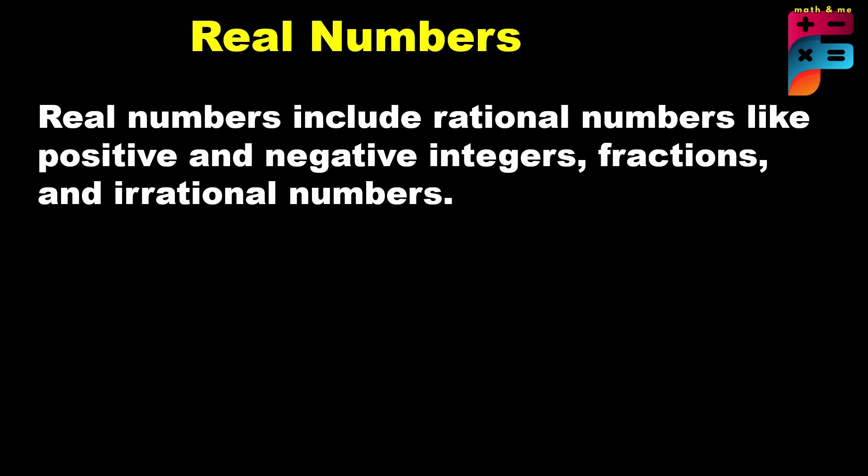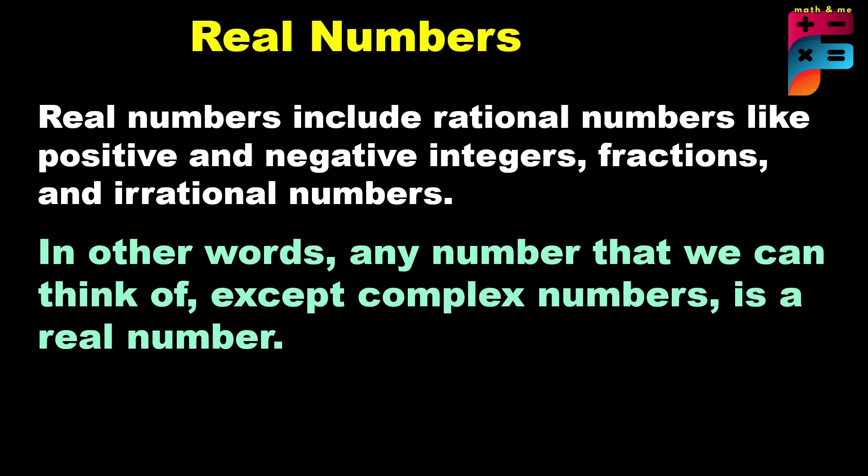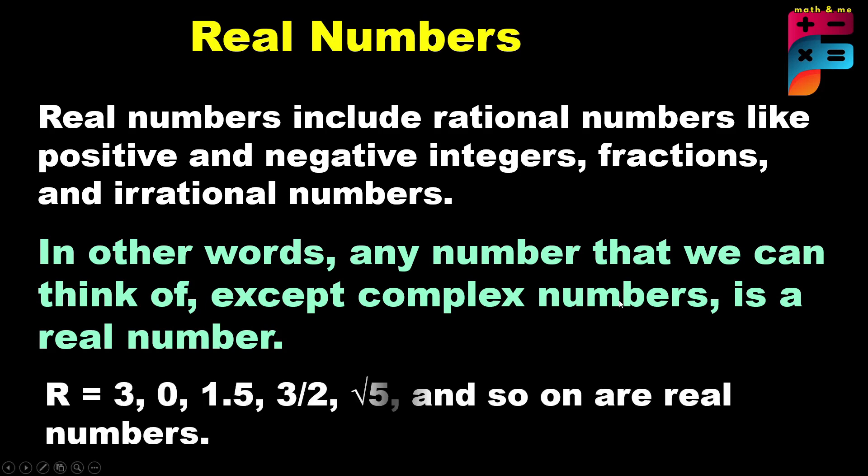Real numbers. Real numbers include rational numbers — positive and negative integers, fractions — and irrational numbers. In other words, any kind of number we can think of, except complex numbers, is a real number. It can be 0, 3, 1.5, 3/2, positive or negative — any kind of number.